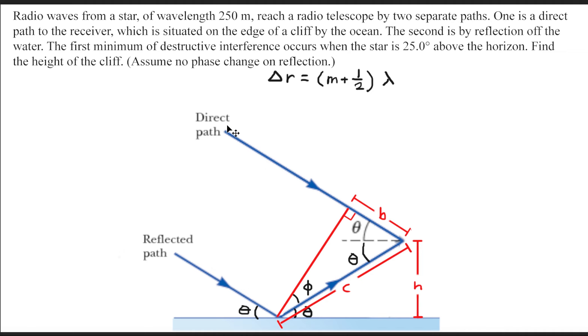We have two paths here: the direct path and the reflected path. We need to figure out if the reflected path is larger in length or if the direct path is larger in length. In this situation, the reflected path is larger in length, because the direct path is typically the shortest distance from A to B. The reflected path is labeled C and the direct path is labeled B. So we can substitute this in and get that C minus B equals M plus one-half times lambda.